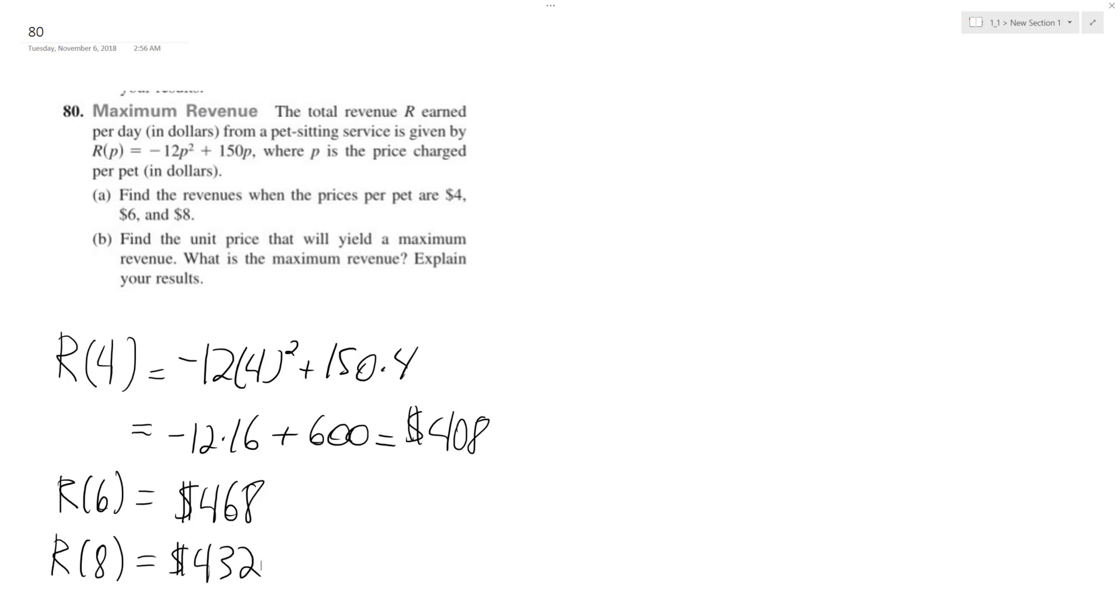Okay, so this is an inverted parabola because the negative coefficient from the P squared, so it's going to have a maximum profit, or revenue, so to find that, we're going to take negative B over 2A.